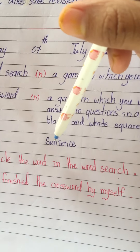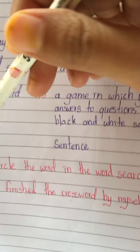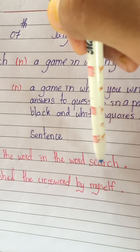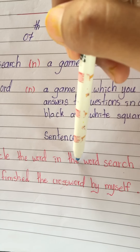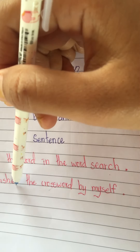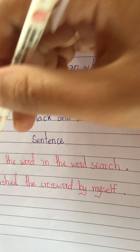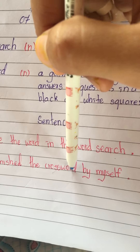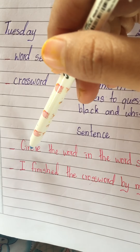Now here are two example sentences. First: 'Circle the word in the word search.' Second: 'I finish the crossword by myself.' Now your turn to repeat.